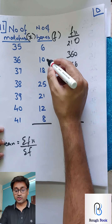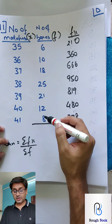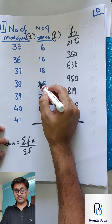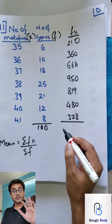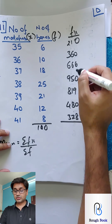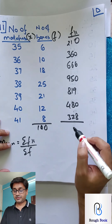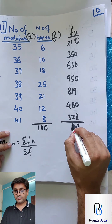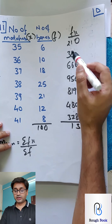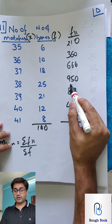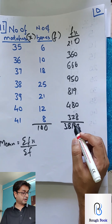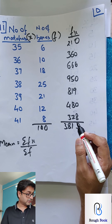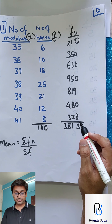Total the frequency column: 10, 21, 22, 30 — adding up gives 100. So it is going to be very simple to divide. Total FX column: adding everything gives 3813. So 3813 divided by 100 gives 38.13. They say correct to one decimal place, so the answer is 38.1 matches. That is the first part of the answer.